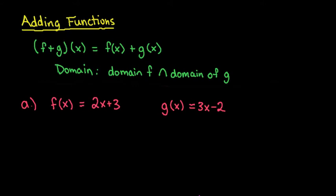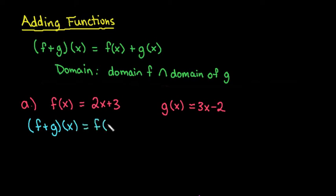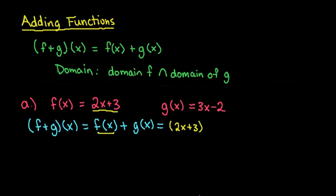For this first one, we're going to find f plus g of x for these two functions. Finding f plus g of x tells us to take the f of x equation and add it to our g of x equation. So we take f of x, which is 2x plus 3, and g of x, which is 3x minus 2, and combine any like terms we can.